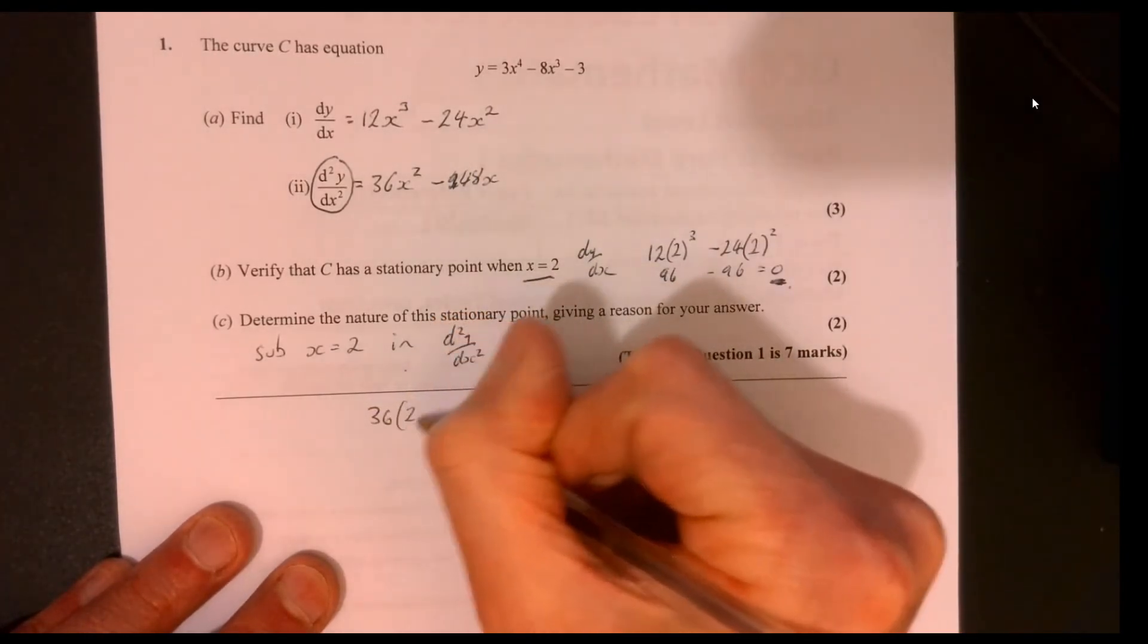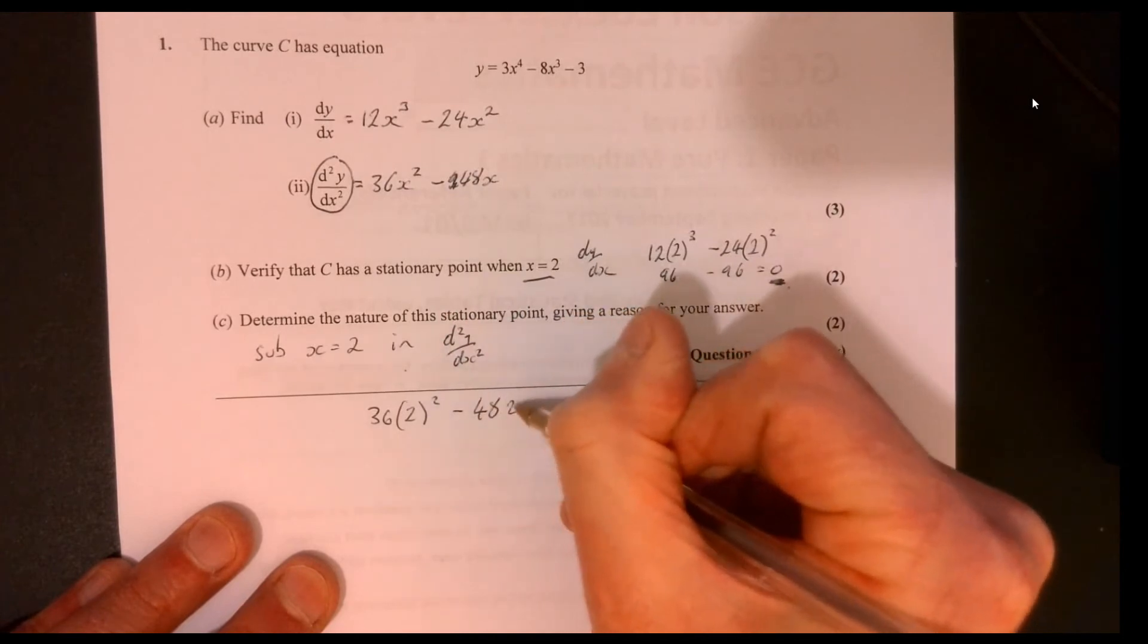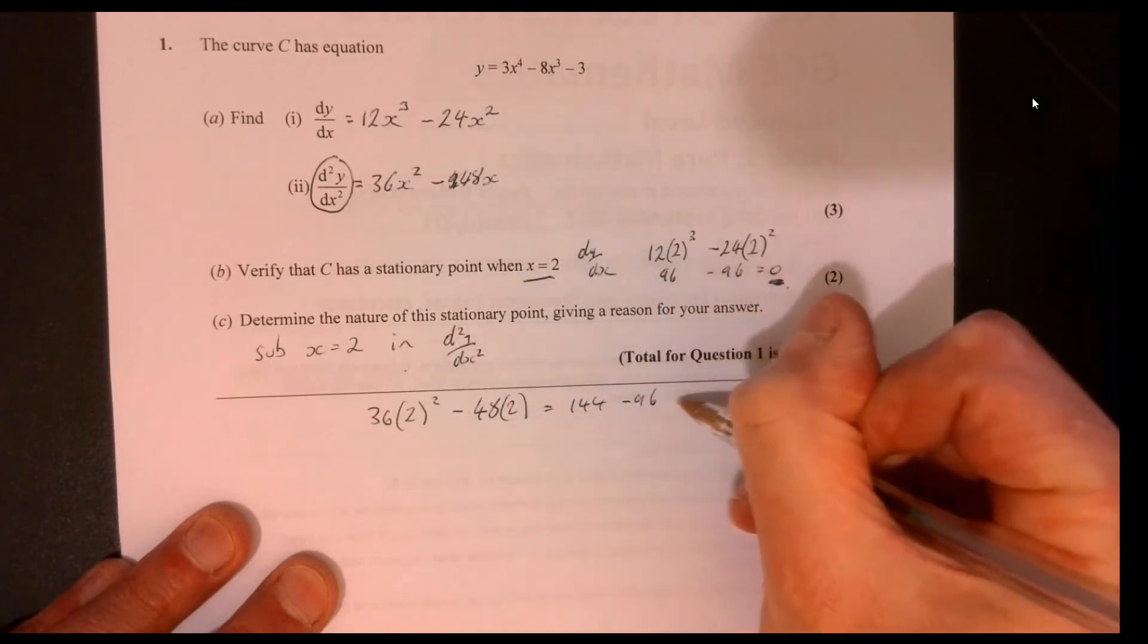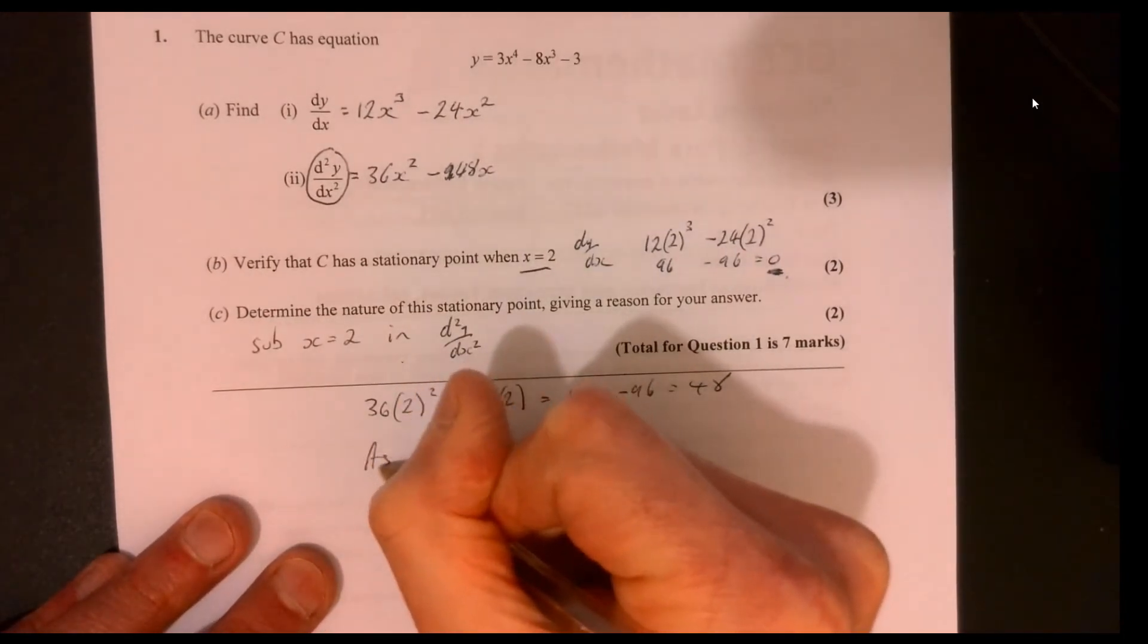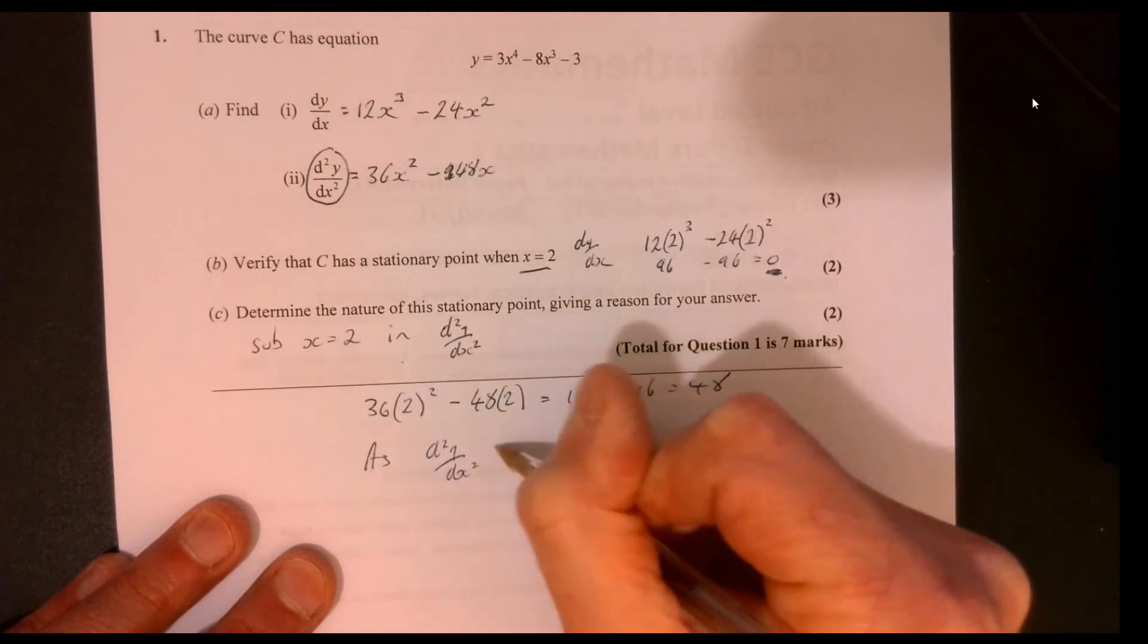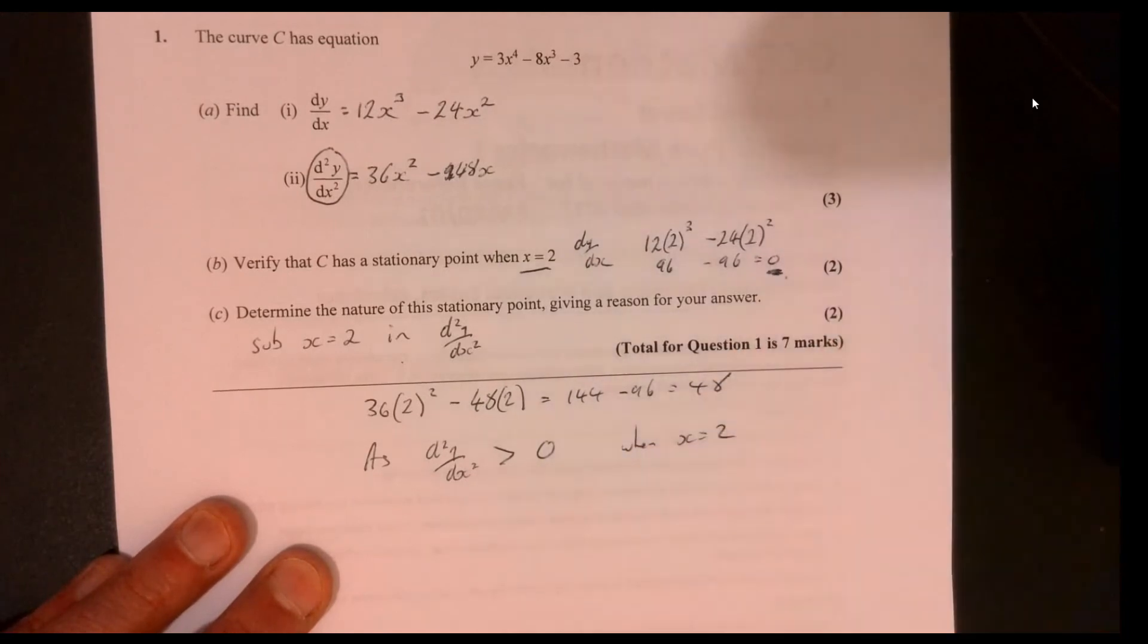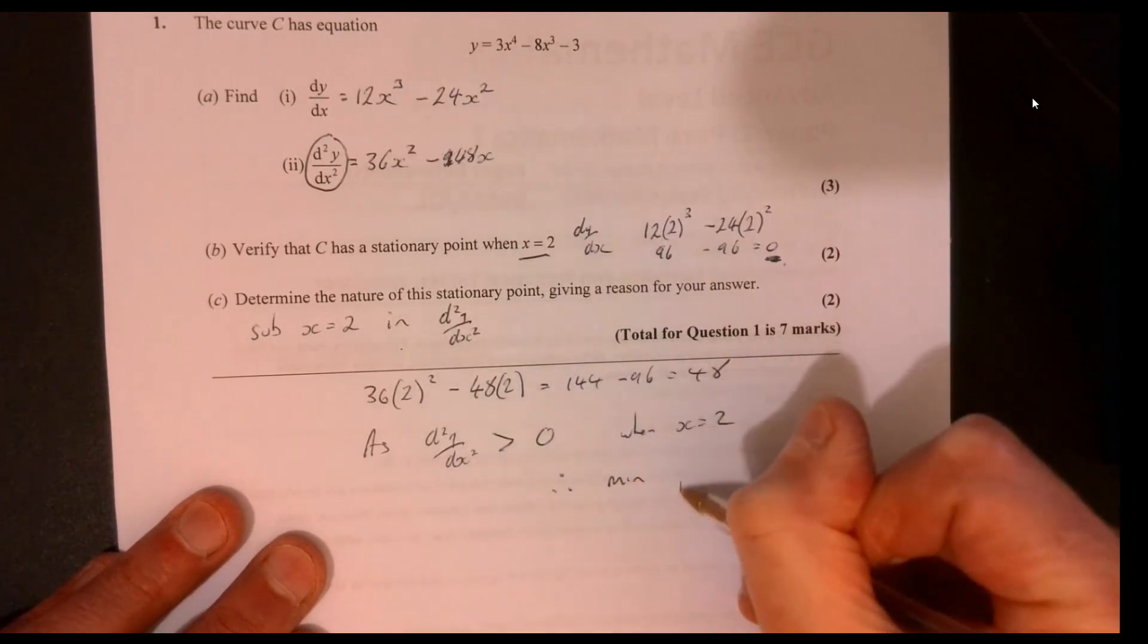So we're going to have 36, 2 squared, take away 48 multiplied by 2, and that's 144 take away 96 equals 48. So as this is more than 0, it's positive when x equals 2, so therefore it's a minimum point.